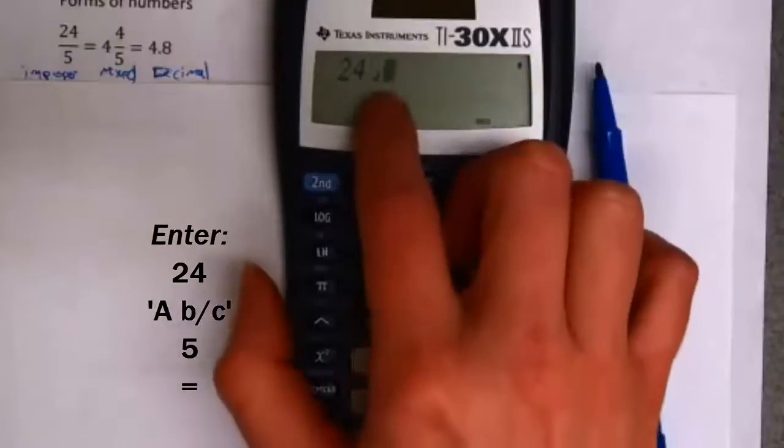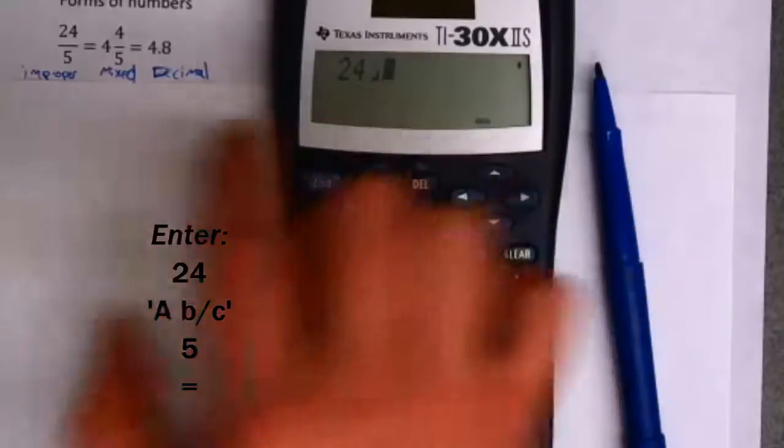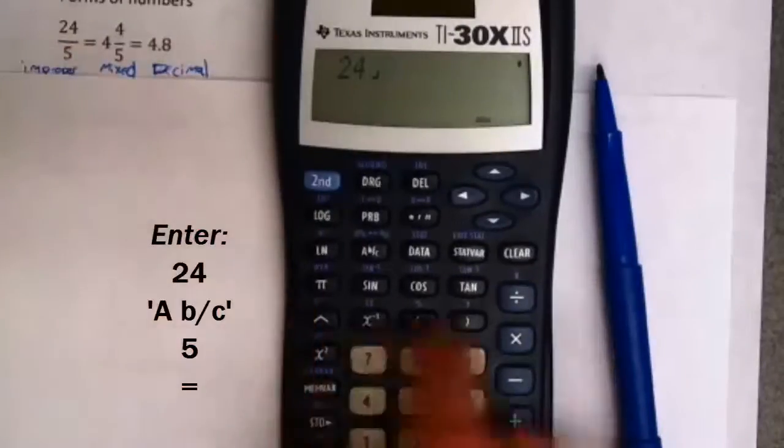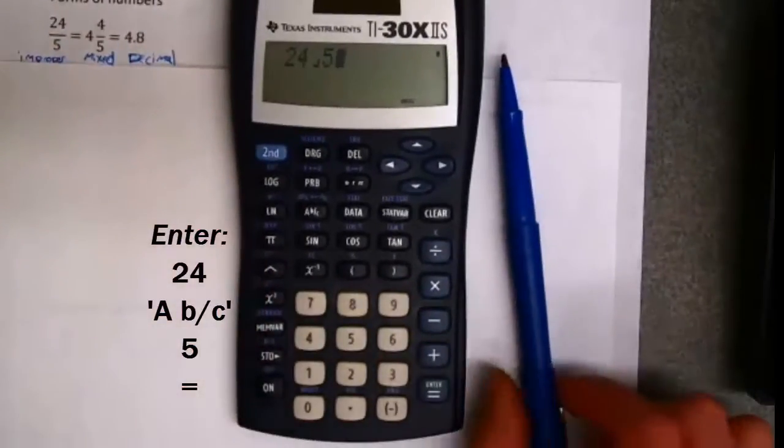Okay, if I hit that, we see a little marker here. And that represents the vinculum, the bar between the top and bottom of the fraction. And then I'll enter my denominator value.